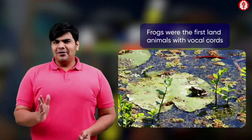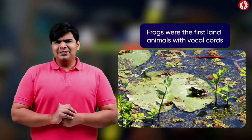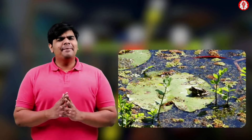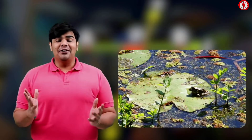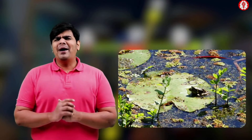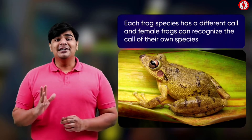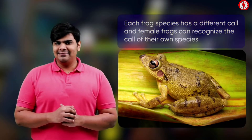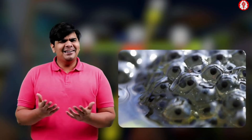Did you know that frogs were the first land animals with vocal cords? Male frogs have vocal sacs like balloons that resonate sounds like a megaphone, and some frog sounds can be heard from a mile away. This vocal cord helps in croaking during the mating season, which aids in reproduction. Each frog species has a different call and female frogs can recognize the call of their own species.